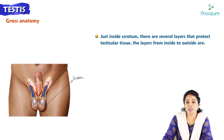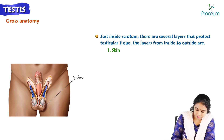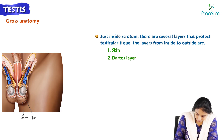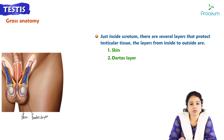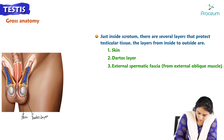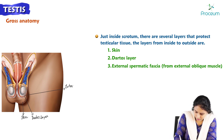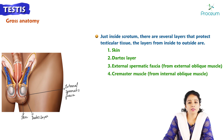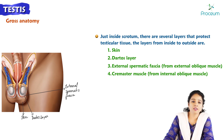Just inside the scrotum there are several layers that protect the testicular tissue. The layers from inside out are: the skin, deep to which is the dartos layer. Deep to the dartos layer is the external spermatic fascia, which is the continuation of the external oblique muscle of the abdomen. Deep to that is the cremaster muscle, which is the continuation of the internal oblique muscle of the abdomen.